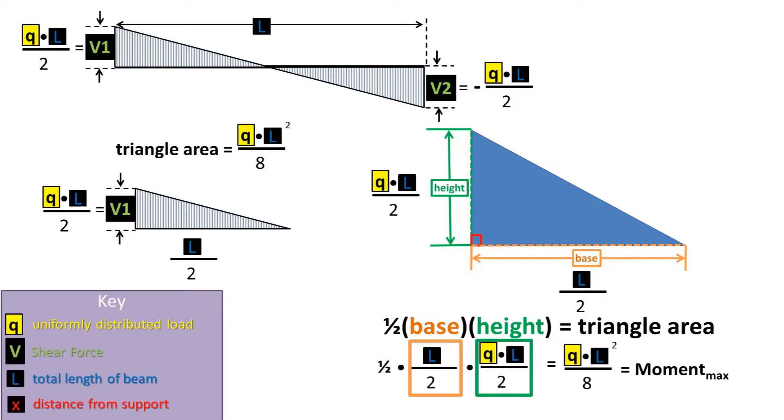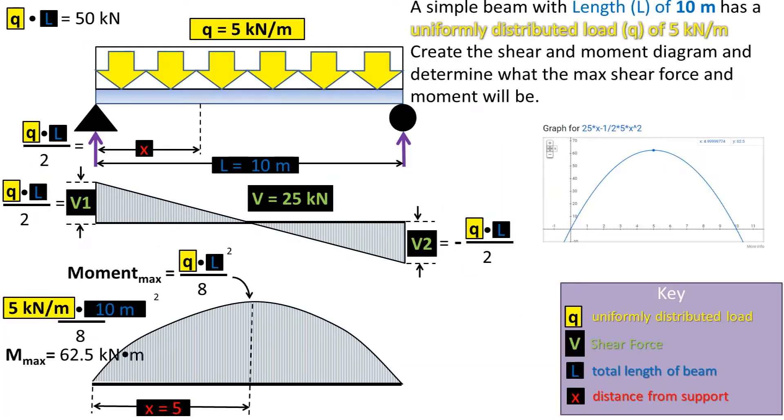Plugging these values into the area of a triangle formula, we get that the max moment will be q times l squared over 8. Plugging in all of our numbers, we get a max moment of 62.5 kNm.